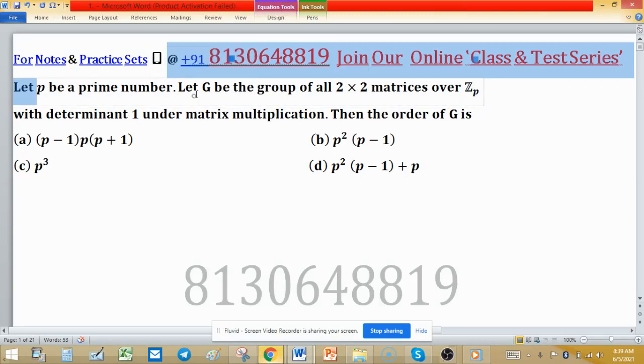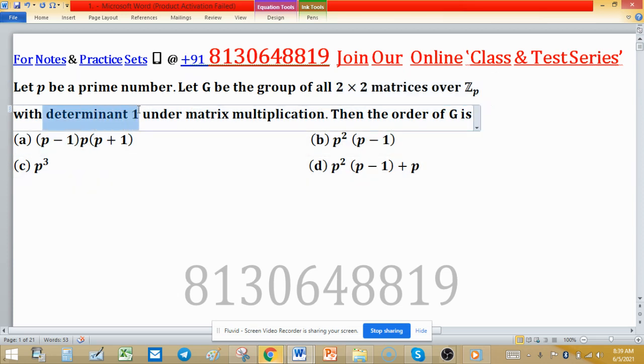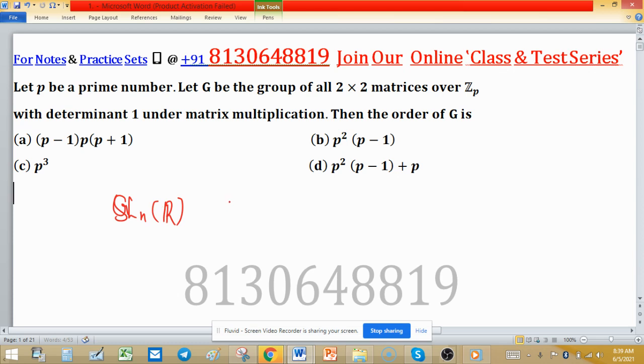Let p be a prime number. Let G be the group of all 2 by 2 matrices over Z_p with determinant 1 under matrix multiplication. Then the order of this group G is: If you remember what is SL_n(R), we define it as all those n by n square matrices with determinant equal to 1.